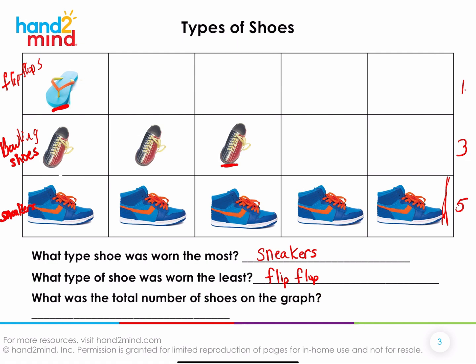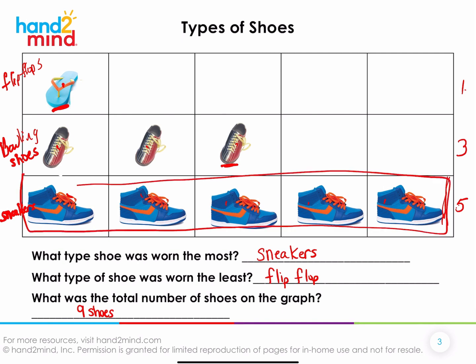What was the total number of shoes on the graph? How many of you said nine shoes? Nine again! How did you get nine? Some of you counted one through nine — you could count all of them. Or you could try counting on. If you knew sneakers was five, you could go six, seven, eight, nine. Counting on is a really nice way to count very efficiently.